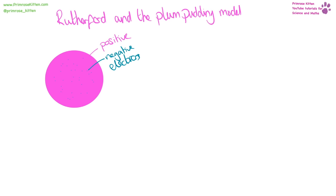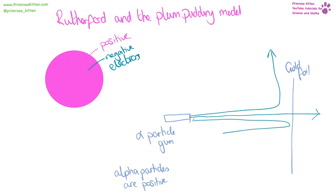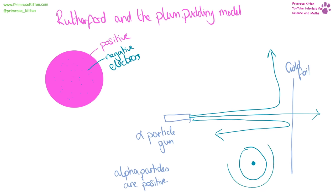Rutherford wanted to test the plum pudding model — a large positive blob with negative bits dotted throughout. He took a sheet of gold foil and fired alpha particles at it. The majority went straight through, but very occasionally one would be deflected a little, and even more occasionally one would be deflected a lot. This told Rutherford that instead of an evenly distributed pattern of charges, there is likely an overall build-up of positive charge in the middle with negative charges around the outside, meaning the majority of the atom is empty space. This led to the development of the nuclear model of the atom.